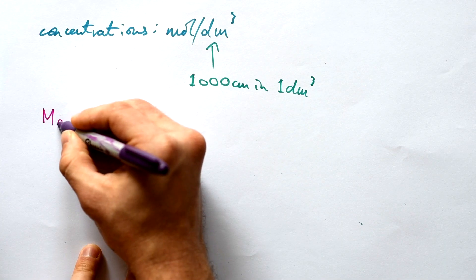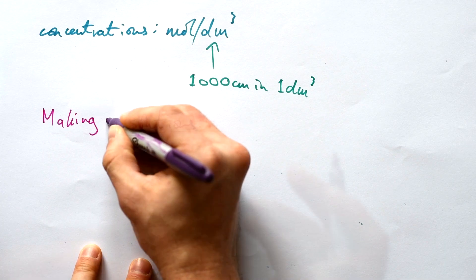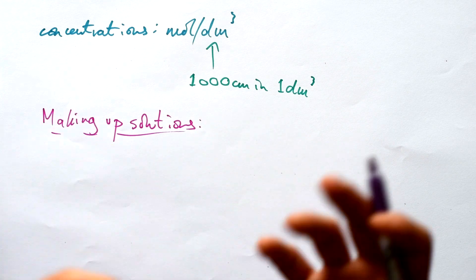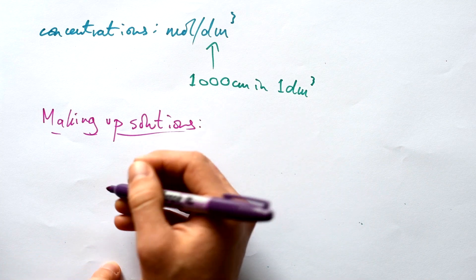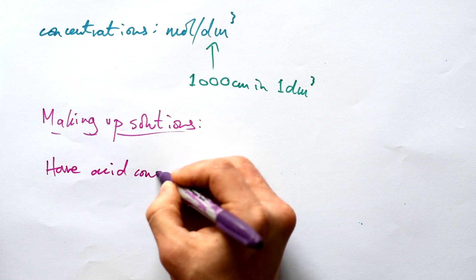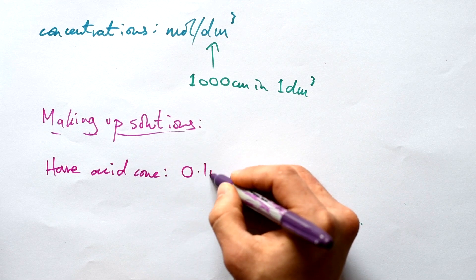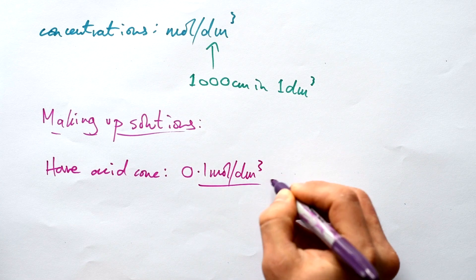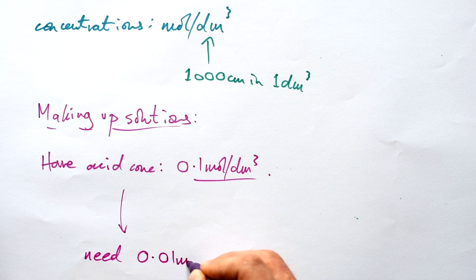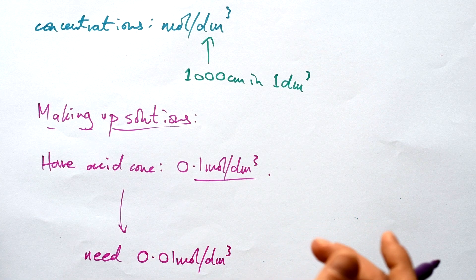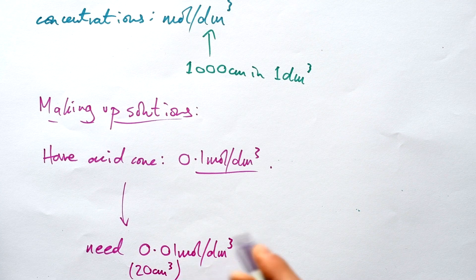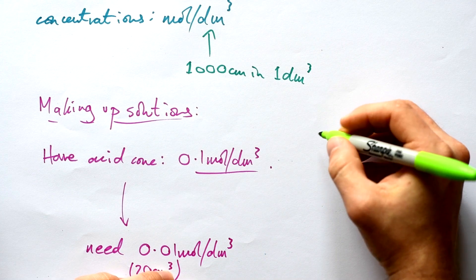We don't really need that conversion when making up solutions. Generally in school or in a science lab you'll have solutions — acids, alkalis, whatever — at a certain concentration. Let's say you have an acid at 0.1 mol/dm³, but you need 0.01 mol/dm³ — a more dilute acid — and you know you want 20 cm³ of that.